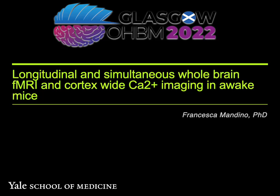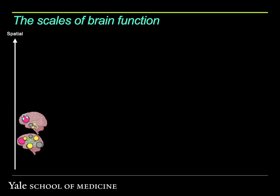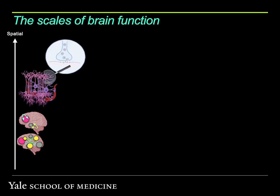Hi everyone. We all know that we can study brain function across many different perspectives and scales. For example, if we look at the spatial scale of events and spatial resolution, we can study the whole brain, but we can also focus on specific brain networks or brain regions, and we can even go further into neuronal circuits.